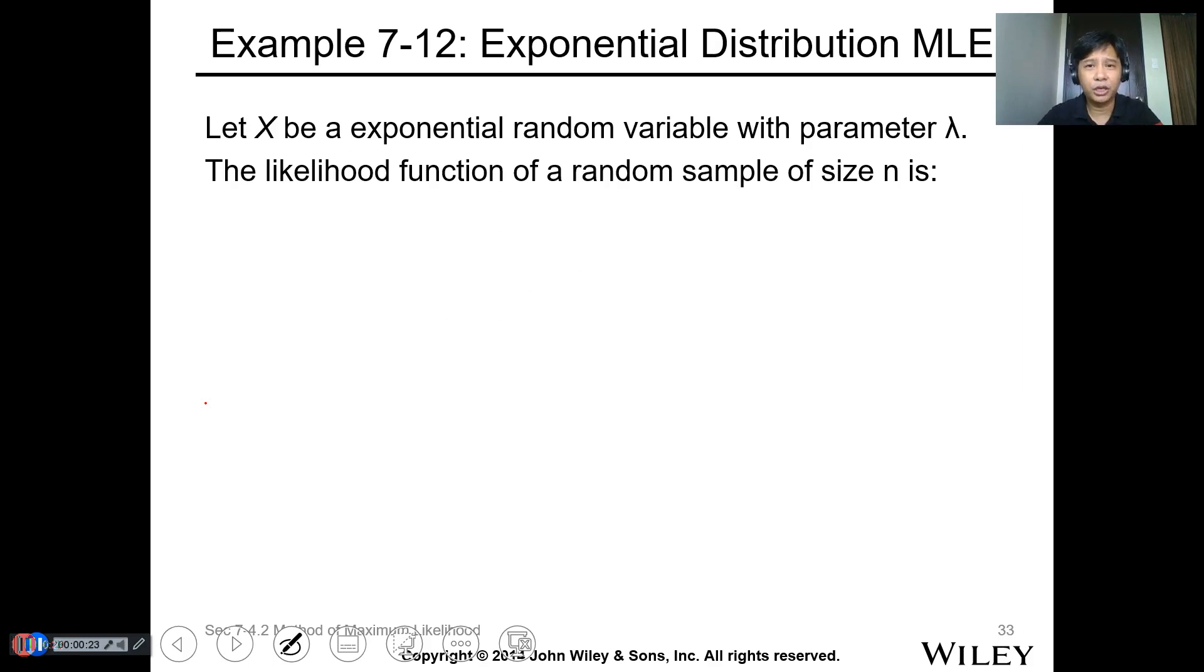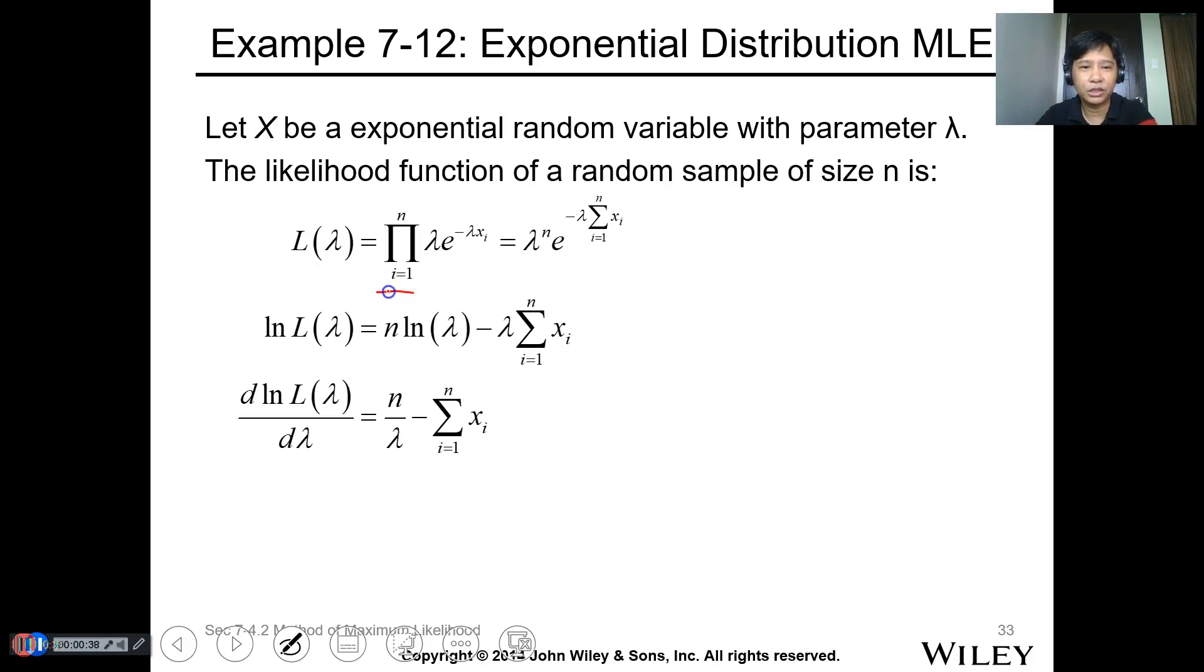This one is for the exponential distribution MLE. Let X be an exponential random variable with parameter lambda. The likelihood function of the random sample of size n is the summation from 1 to n of your exponential function. If we use the summation notation in the exponent, to bring it down, you just get the LN of that function.